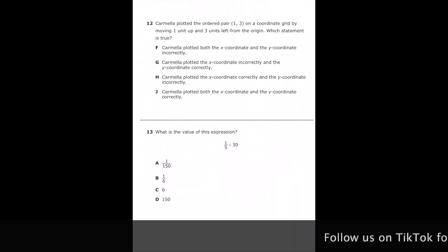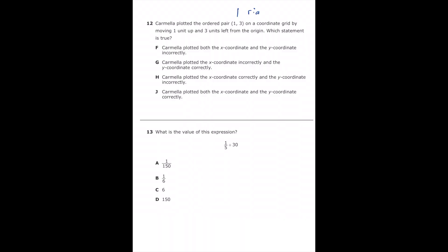Number 12, Carmela plotted the ordered pair (1, 3) on a coordinate grid by moving one unit up and three units left from the origin. Which statement is true? So before we look at the answer choices, what she should have done is gone one unit to the right and then three units up. Because our X value, our first number always tells us right or left, and then our second number is up or down.